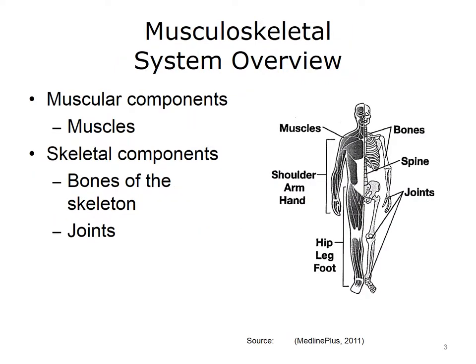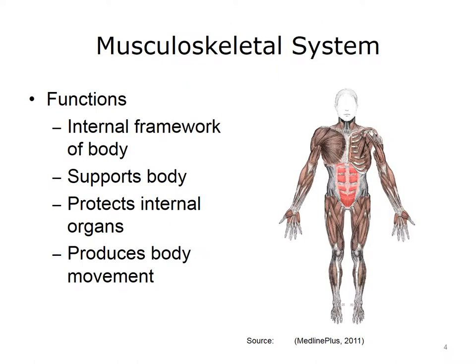Let's start with an overview of the human musculoskeletal system. Sometimes the musculoskeletal system is broken down into two different systems: the muscular system and the skeletal system. The muscular components are primarily the muscles of the body, while the skeletal components include the bones and joints. The musculoskeletal system has four main functions: it provides the internal framework for the body, helps support the body, protects the internal organs, and enables body movement.